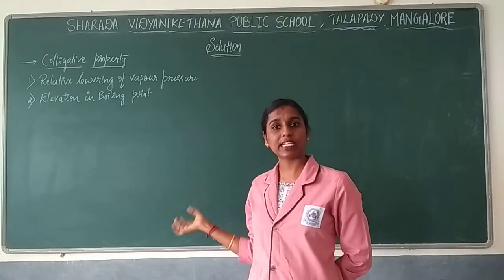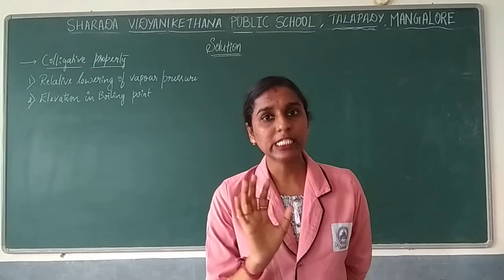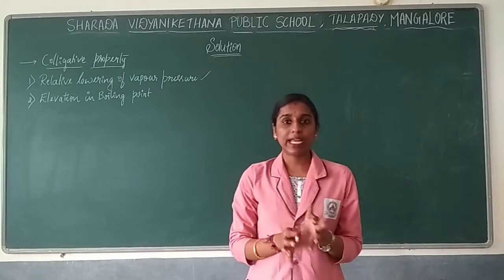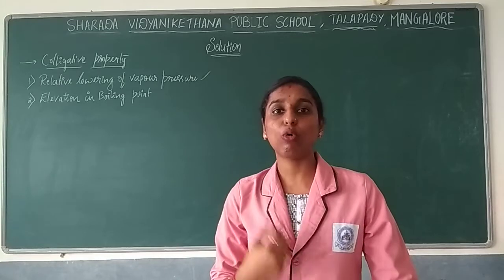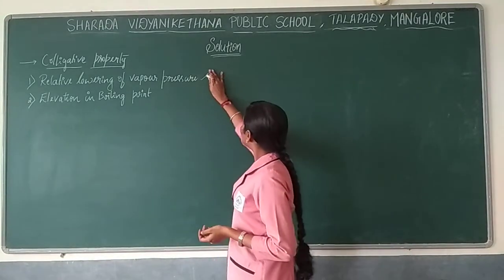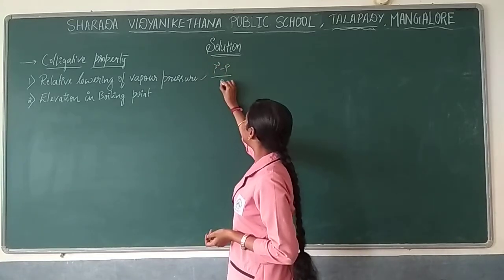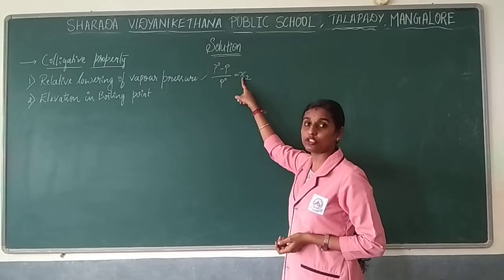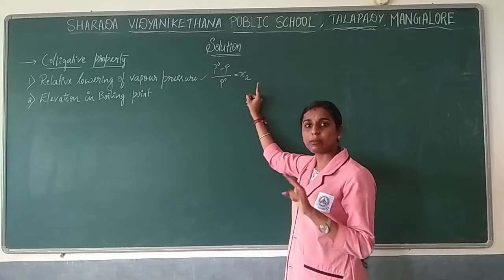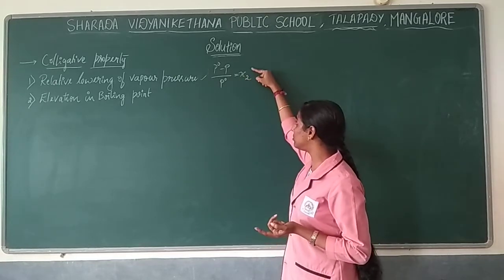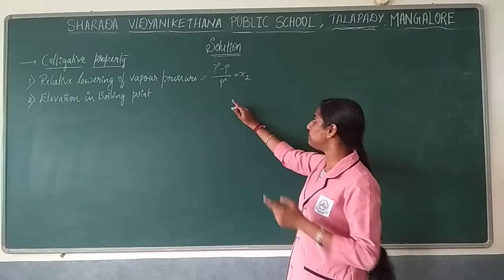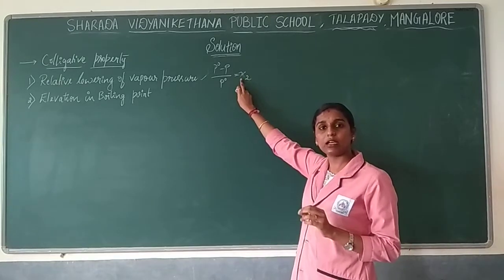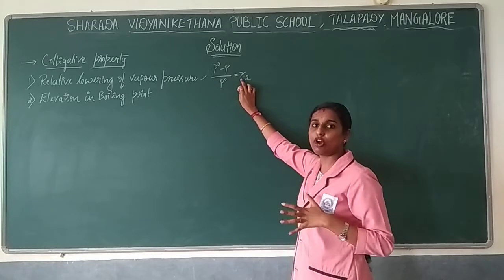The relative lowering of vapor pressure is related to the mole fraction of the solute. The formula is: (P0 minus P) divided by P0 is equal to X2. This is the relative lowering of vapor pressure — it depends on the mole fraction of the solute, which is the number of moles of a particular component divided by the total number of moles.